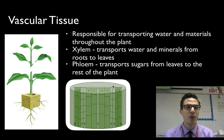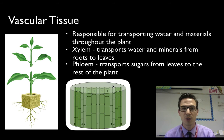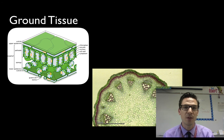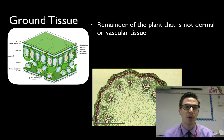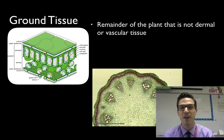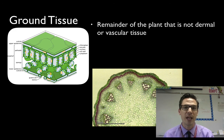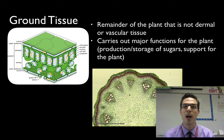Now we've covered the outer part of the plant — dermal tissue — and vascular tissue. But what about the rest of the leaves, roots, and stems? What about all the rest of that tissue? That is something we call ground tissue. The simplest way to think about it is it's the remainder of the plant. If it's not dermal and it's not vascular tissue, then it's ground tissue, and that's pretty much where all the major functions happen.